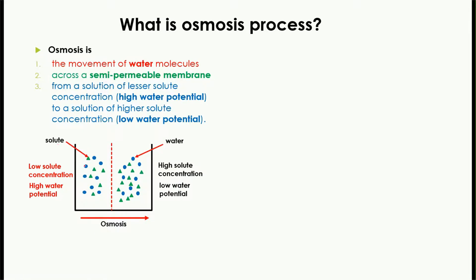Let's take this example. In this diagram, the green part is solute while the blue one is water molecules. At this part, we have low solute concentration and high water potential, while here we have high solute concentration and low water potential. According to our definition of osmosis, water will move from high water potential to low water potential. So water molecules will start moving from this part to this part through the semi-permeable membrane shown here, and will enter the part where low water potential is present.